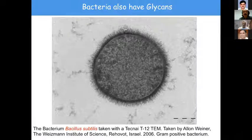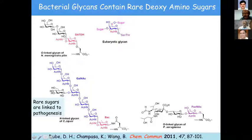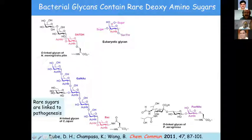Even though glycans exist in bacteria, there is one key difference: whereas our glycans start with N-acetylgalactosamine as the starting sugar, bacteria often have rare deoxyamino sugars such as DATDH in meningitis, bacillazamine in C. jejuni, or fucosamine in Pseudomonas aeruginosa. Recently, the presence or absence of these sugars has been shown to be linked to pathogenesis, making them very important players.